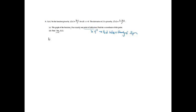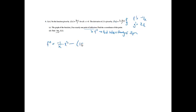To find the second derivative, I need to apply the quotient rule to f prime. The derivative of 1 is 0, the derivative of negative ln(x) is negative 1 over x, and the derivative of x squared is 2x. So f double prime equals (negative 1 over x times x squared) minus (1 minus ln(x) times 2x), all over x to the 4th.